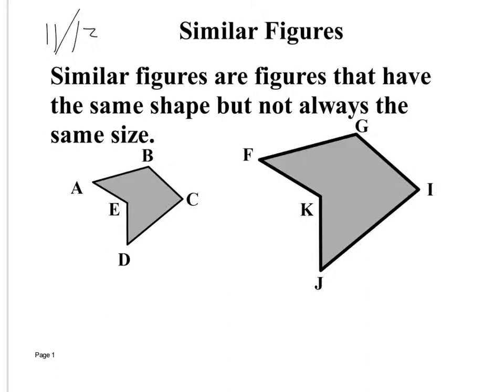This lesson is about similar figures, and it all goes back to proportions. What they're going to ask you to do is solve for missing sides. Similar figures are figures that have the same shape but not always the same size. They'll give you the same shape in two different sizes, and the reason we can solve for sides using proportions is because they are at a constant ratio — the sides are proportional to each other.